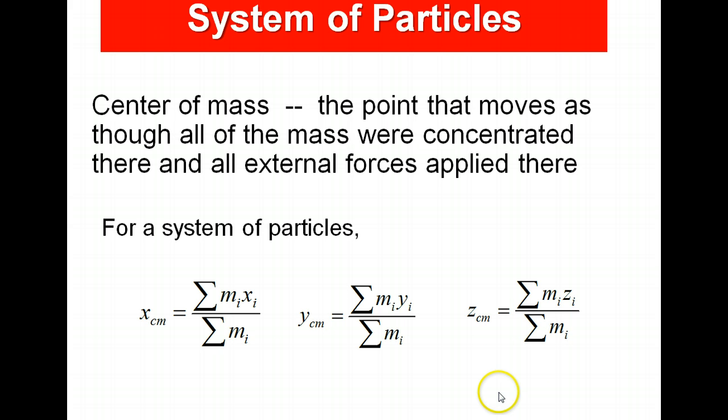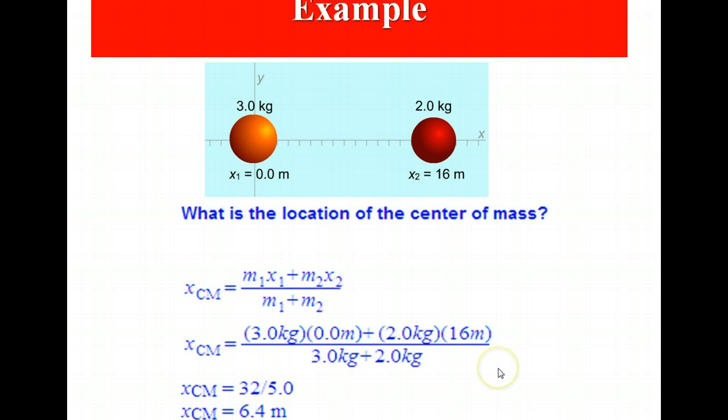It is easiest if we show an example. Here we have two particles, mass three kilograms, two kilograms, located as shown. What is the location of the center of mass? I'm going to apply my definition: m1 x1 plus m2 x2 over m1 plus m2. Plugging in the appropriate values, I show that the location of the center of mass is at the position 6.4 meters, or right there. Notice it is located closer to the more massive of the two objects, as we expect.